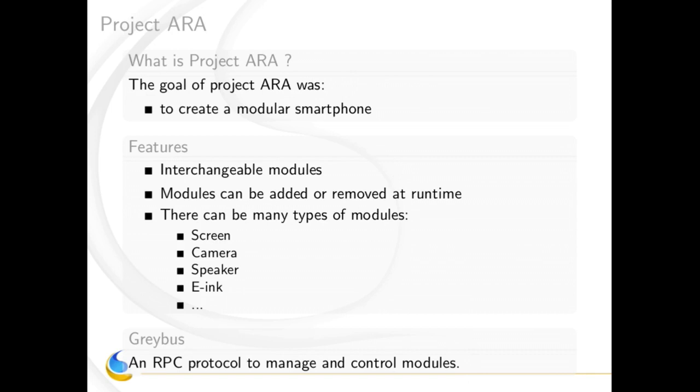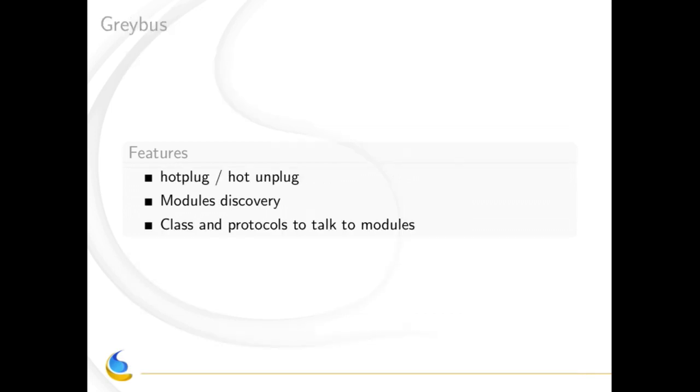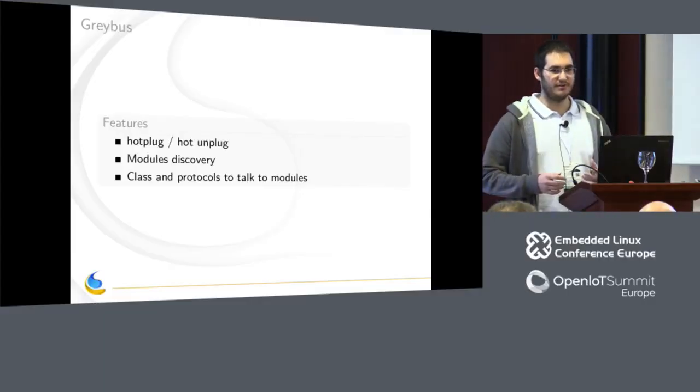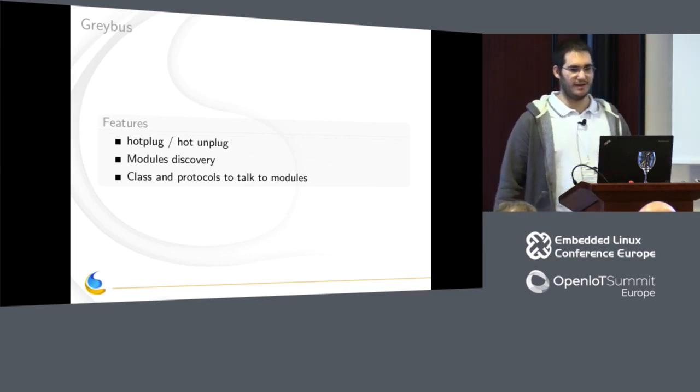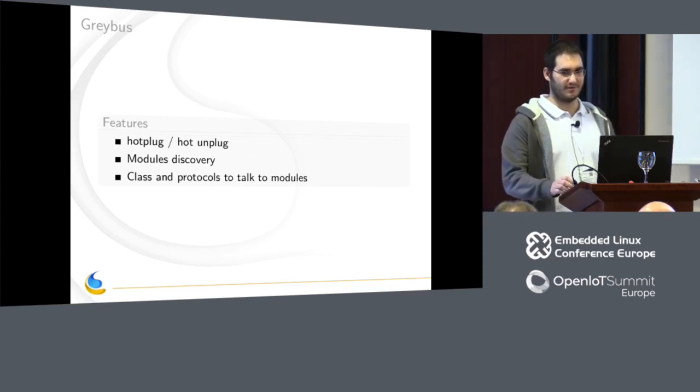The role of Greybus was to manage the modules — to add them and remove them. The main features of Greybus were hot plug and hot remove, and module discovery: when you insert a module in the phone, you have to detect it and prepare it to be connected to other modules such as the CPU. Modules also provide a lot of classes and protocols, and that's the main interesting thing about Greybus.